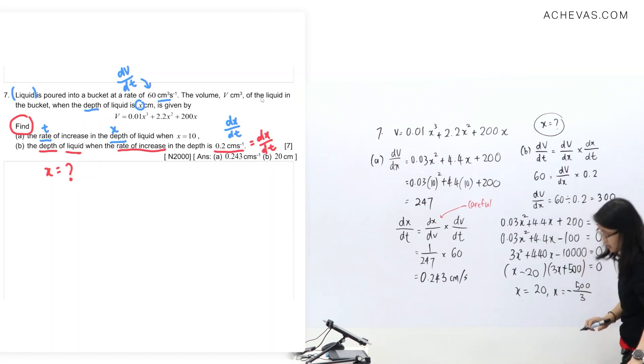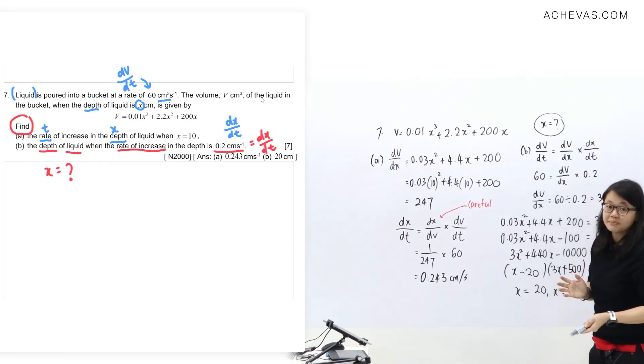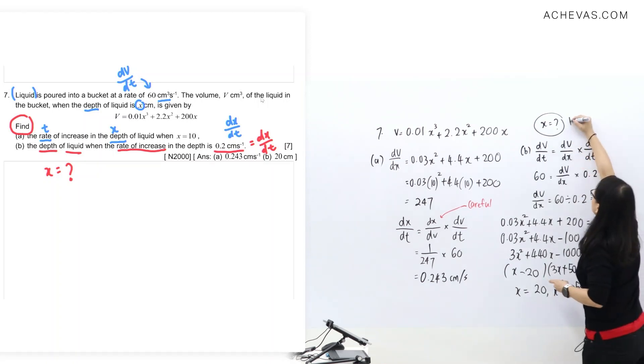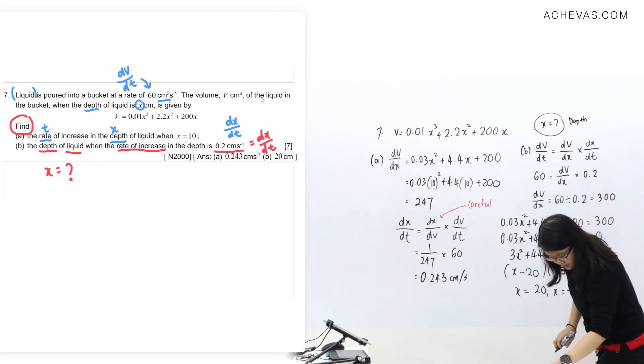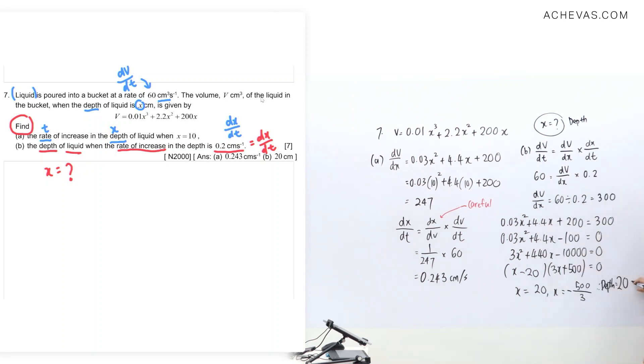And this question, you remember, is the depth of the liquid, so we're finding a depth question. You remember this one is depth, so this value I can only take this one. So I will answer: the depth value will be 20. What's the measurement? cm. So cm. This one is being rejected, but I will write it again.